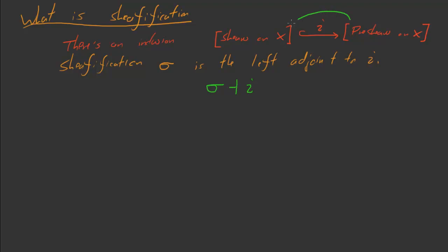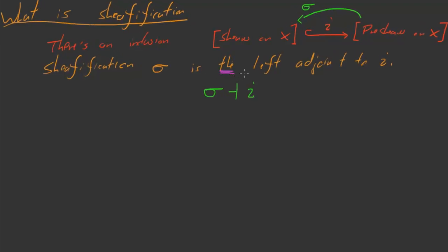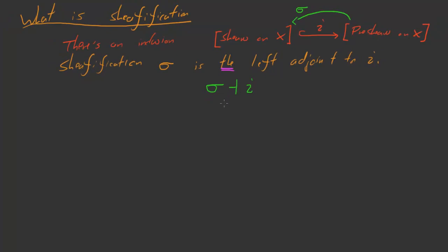This is a description rather than a construction - maybe the left adjoint doesn't exist. But the left adjoint does in fact exist, and sheafification is that left adjoint. Sheafification is the functor sigma such that sigma is the left adjoint to i. Left adjoints are essentially unique, so I'm kind of assuming that. This is one way of characterizing sheafification, and this is the way that I like.